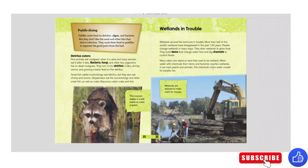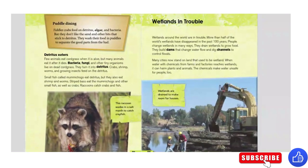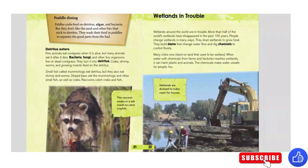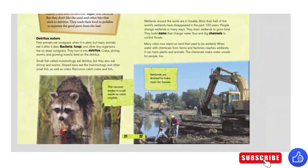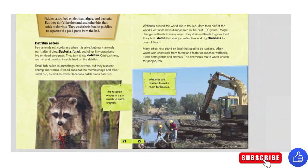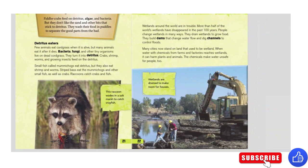Puddle dining. Fiddler crabs feed on detritus, algae, and bacteria, but they don't like the sand and other bits that stick to detritus. They wash their food in puddles to separate the good parts from the bad.